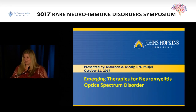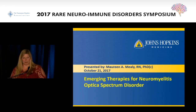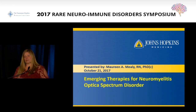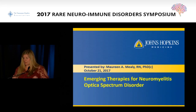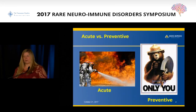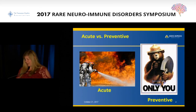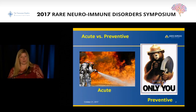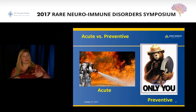Neuromyelitis optica is a recurring autoimmune disorder of the central nervous system that preferentially targets the optic nerves and spinal cord. You accrue disability with each inflammatory event. So the purpose of treatment is first to put out the fire, and second to prevent the fire from happening in the first place - or in the next place, I should say. We're going to talk about where we are with treatment for this disease and where we're going.